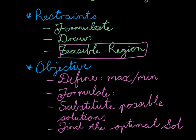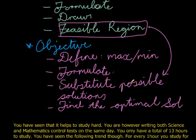Then we go into the objective. We define what we're trying to do, maximize or minimize. We formulate, then substitute in the possible solutions that are given by the feasible region, and then finally find the solution or the value that is the maximum or minimum.